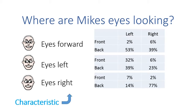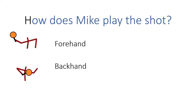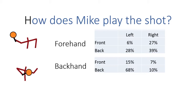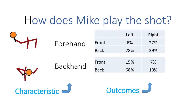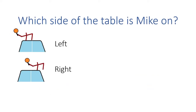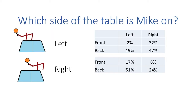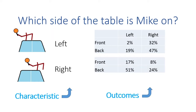The first thing to note is the characteristic is where Mike's eyes are pointing, and the second — the outcomes — are the data that I'm measuring. I can also bring in other characteristics. So is Mike playing a forehand or is Mike playing a backhand? Each one of those characteristics will have its own outcome data. I can take another characteristic: is Mike standing on the left or the right-hand side of the court? And again, I build a data set showing exactly where the ball is going to be placed based on where he's stood.